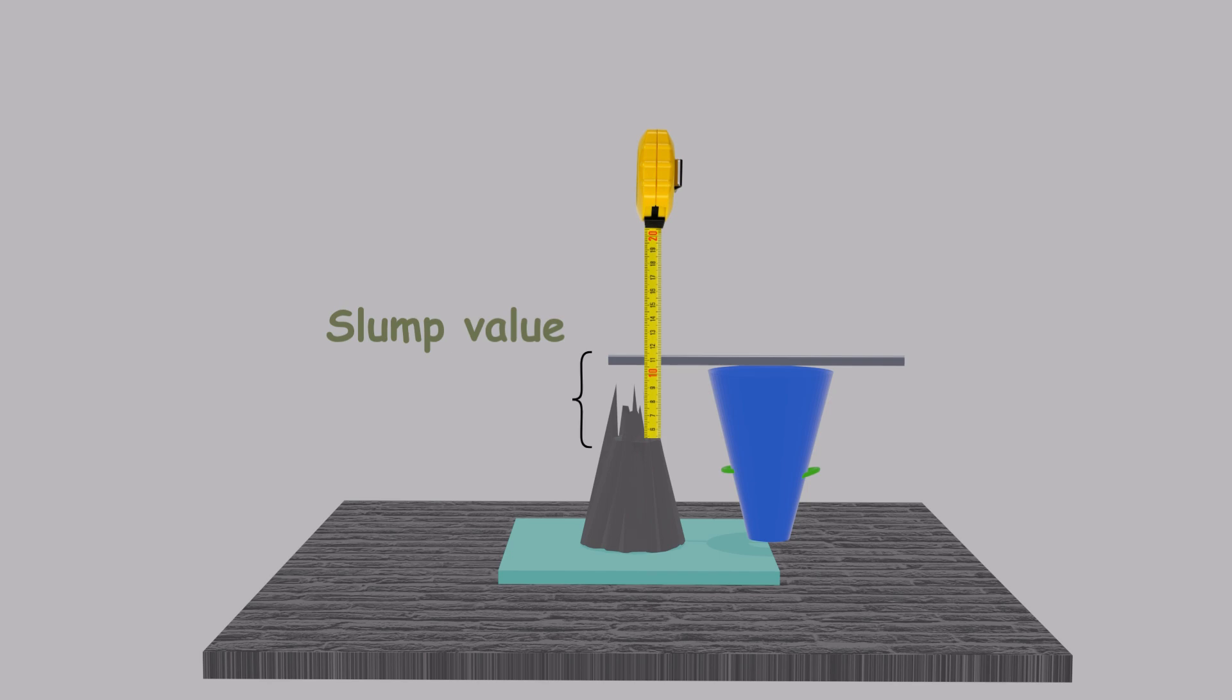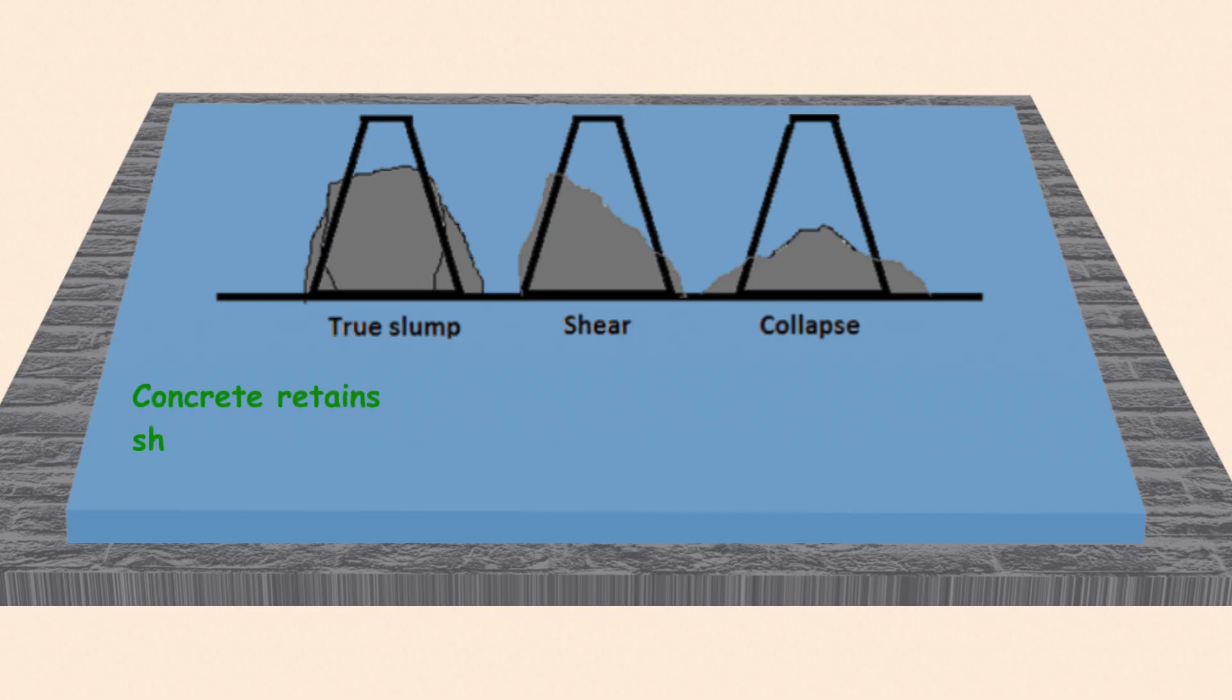You'll get one of the following results. True slump: the concrete retains its shape and only subsides slightly. This is ideal. Shear slump: the concrete slips sideways. This shows a lack of cohesion. Collapse slump: the concrete completely flattens. This means the mix is too wet or has too much water.